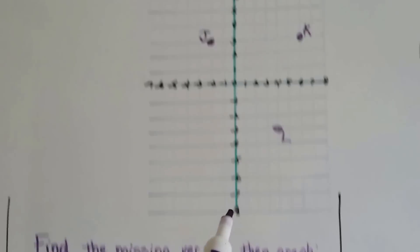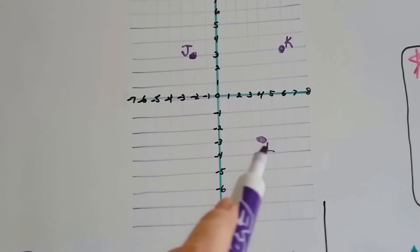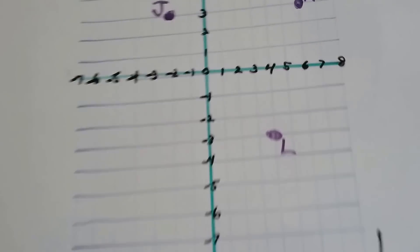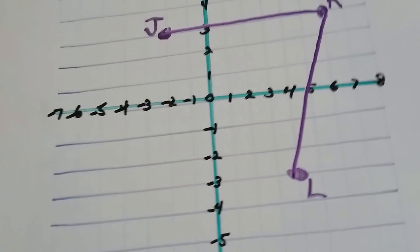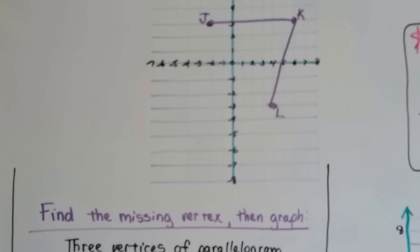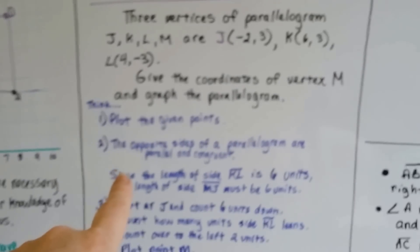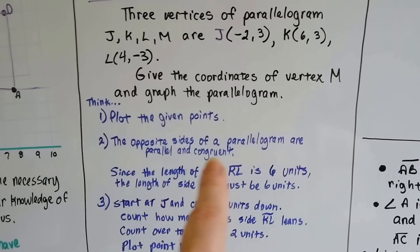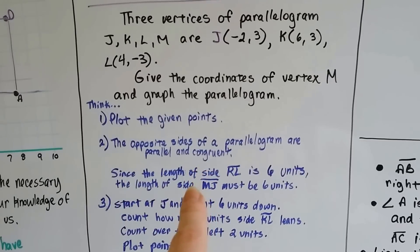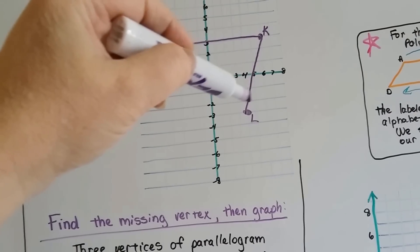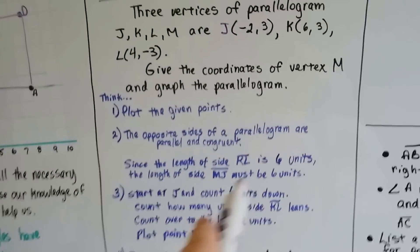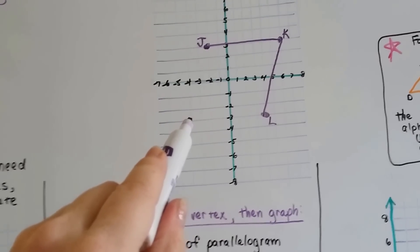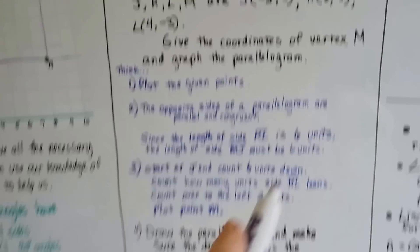Well, look what we're making here. It says it's a parallelogram. Well, if this is a parallelogram, that means that the sides have to be parallel. So, let's connect J and K. And let's connect K and L. So, if this is a parallelogram, where are the other lines supposed to be? Let's read number 2. The opposite sides of a parallelogram are parallel and congruent. Since the length of side KL is 6 units, 1, 2, 3, 4, 5, 6, the length of side MJ must be 6 units. So, wherever M is to J must be 6 units. So, we start at J and count down 6 units.